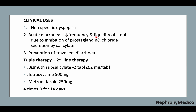Clinical uses include non-specific dyspepsia and acute diarrhea, with decreased frequency and liquidity of stool due to inhibition of prostaglandin and chloride secretion by salicylate. It is also used for prevention of traveler's diarrhea. In triple therapy, it is the second-line regimen: bismuth salicylate 2 tablets with tetracycline 500 mg and metronidazole 250 mg, four times daily for 14 days.